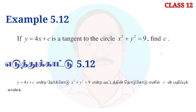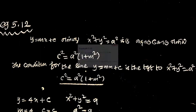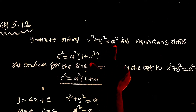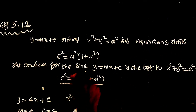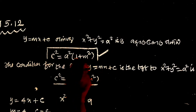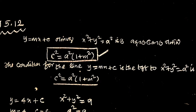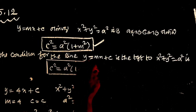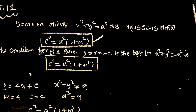We have y equal to 4x plus c and the circle x squared plus y squared is equal to 9. The condition for the line y equal to mx plus c to be tangent to the circle x squared plus y squared equal to a squared is: c squared is equal to a squared into 1 plus m squared.